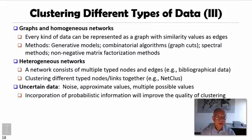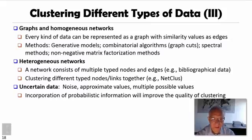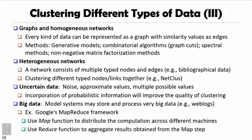Uncertain data means the data may contain noise, may have approximate values or multiple possible values. We usually need to incorporate probabilistic information, such as distributions or approximate values, which will improve the quality of clustering.